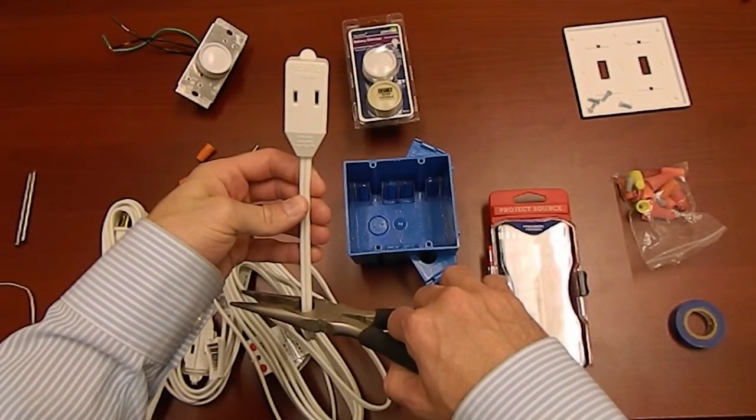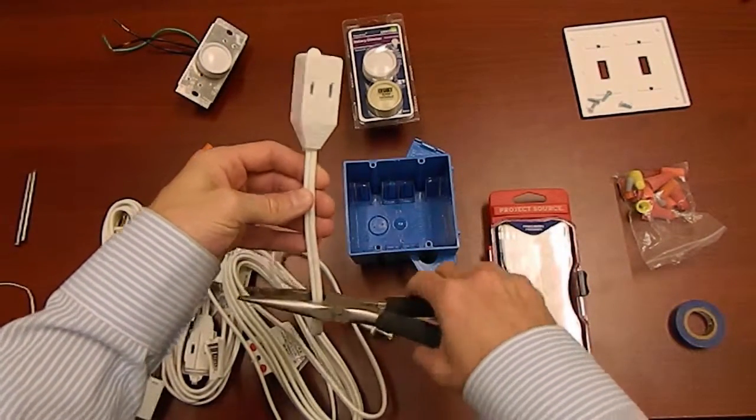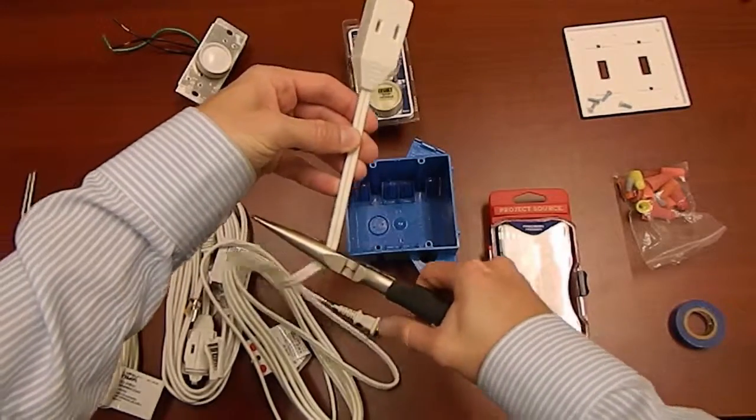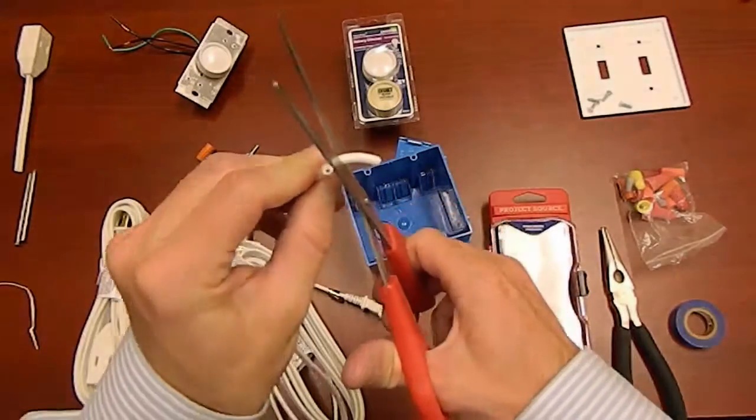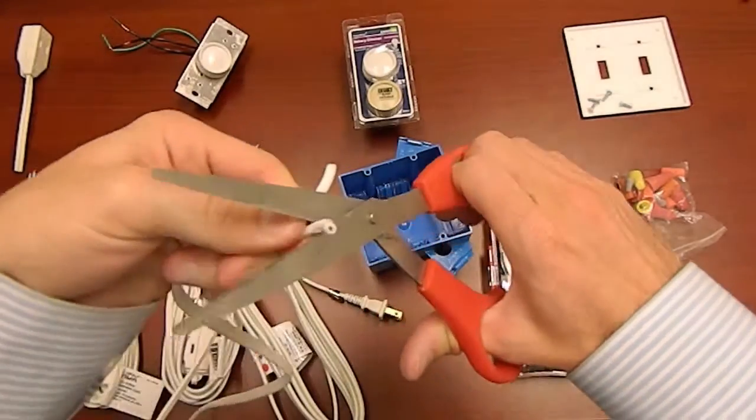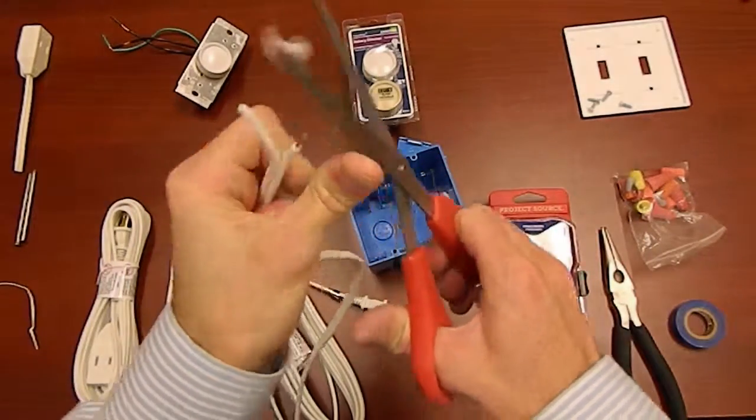First thing I'm going to do is make my supply cord by cutting off its end about six inches from the plug. I couldn't find my wire stripper so I'm using scissors to strip the ends of these about three quarters of an inch back.